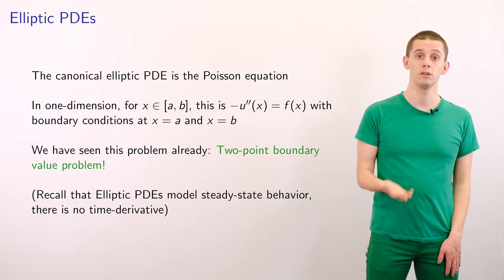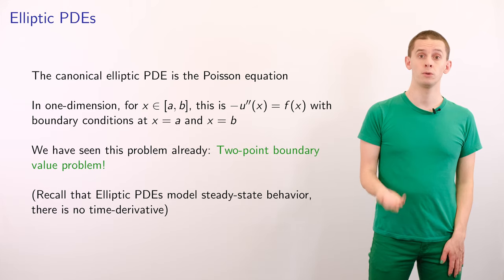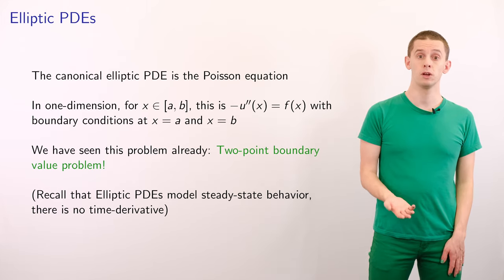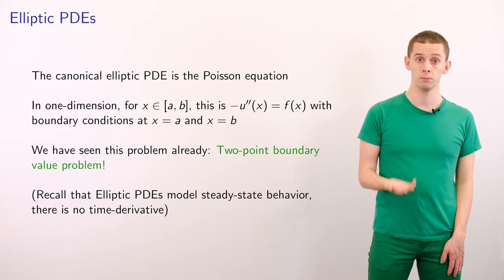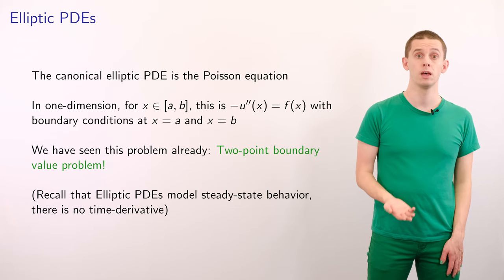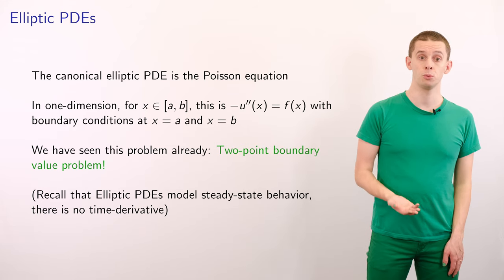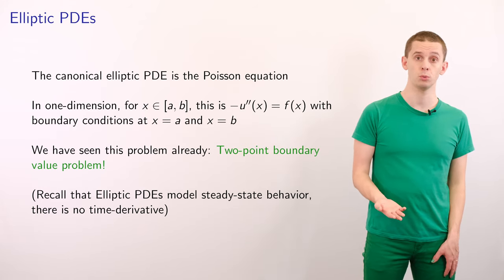The canonical elliptic PDE is the Poisson equation, and in one dimension, for an interval from a to b, the Poisson equation is simply minus u double prime of x is equal to f of x, where f of x is a given function, and we would have boundary conditions at x equal a and x equal b.